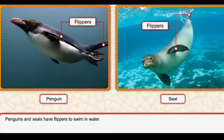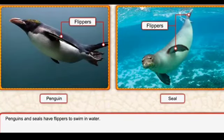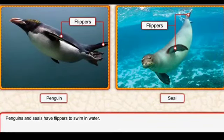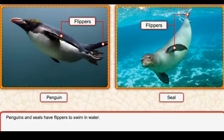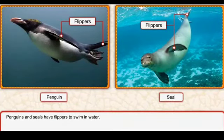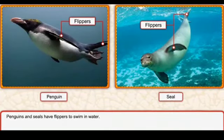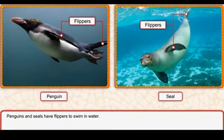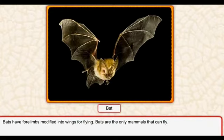Penguins and seals have flippers to swim in water. Penguins aur seals jo hote hain unke paas flippers - matlab pankh - hote hain jin ki madad se woh paani mein tairte hain.